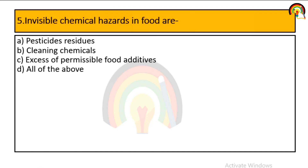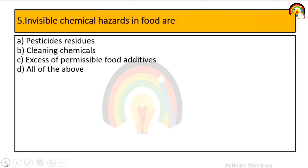Invisible chemical hazards in food are those not visible by eyes. Invisible chemical hazards in food include pesticide residues, cleaning chemicals, and excess of permissible food additives. All of these are invisible chemical hazards present in food, so all of the above are correct.